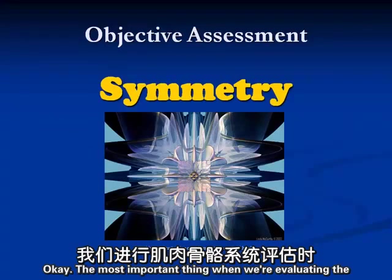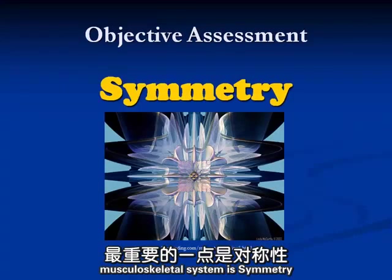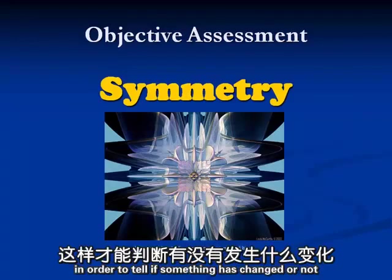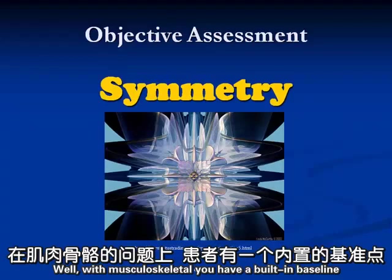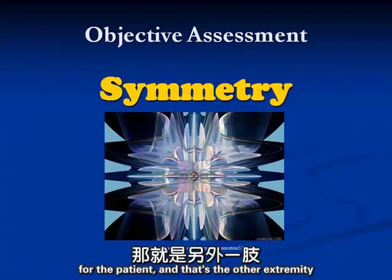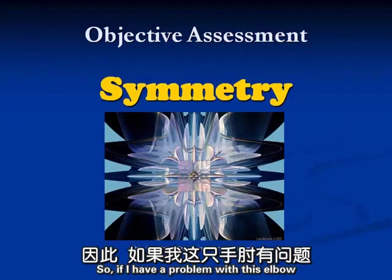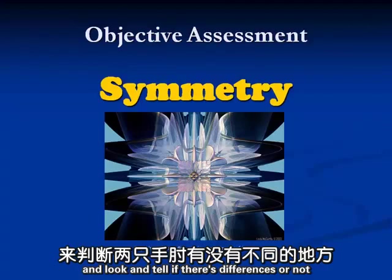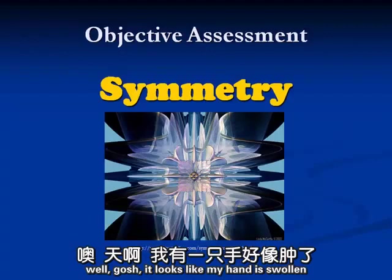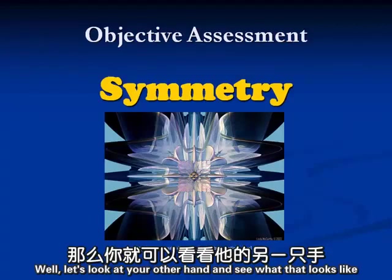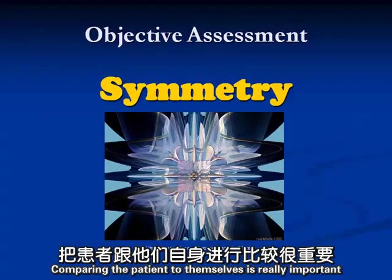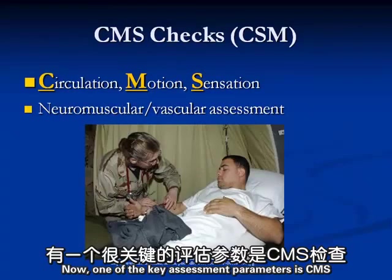The most important thing when evaluating the musculoskeletal system is symmetry. We need to know the patient's baseline to tell if something has changed. With musculoskeletal, you have a built-in baseline: the other extremity. If I have a problem with this elbow, one of the things we do is assess my other elbow so we can compare. That's really helpful with swelling - if a patient says their hand looks swollen, we look at the other hand and see if they look the same.